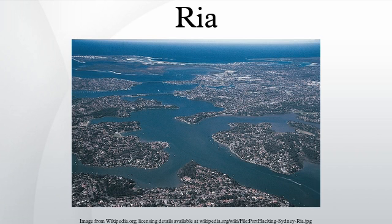A ria is a coastal inlet formed by the partial submergence of an unglaciated river valley. It is a drowned river valley that remains open to the sea. Typically, rias have a dendritic, tree-like outline, although they can be straightened without significant branches. This pattern is inherited from the dendritic drainage pattern of the flooded river valley. The drowning of river valleys along a stretch of coast and the formation of rias results in an extremely irregular and indented coastline.